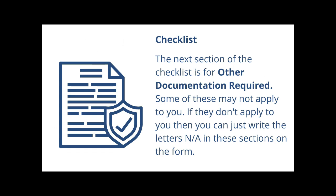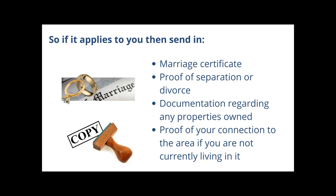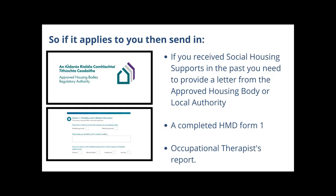The next section of the checklist is for other documentation required. Some of these may not apply to you — if they don't, you can write 'N/A' or 'not applicable' in those sections on the form. If applicable, send in a marriage certificate, proof of separation or divorce, documentation regarding any properties owned, and proof of your connection to the area if you are not currently living in it. If you received social housing supports in the past, you need to provide a letter from the approved housing body or local authority, a completed HMD Form 1, and an occupational therapist report. We have a handy video on filling in the HMD Form 1 in the housing section of our website.